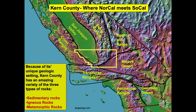But all three terminate in Kern County, which is outlined by the yellow box. Thus Kern County is where northern California landform provinces meet those of southern California such as the transverse ranges and Mojave Desert.